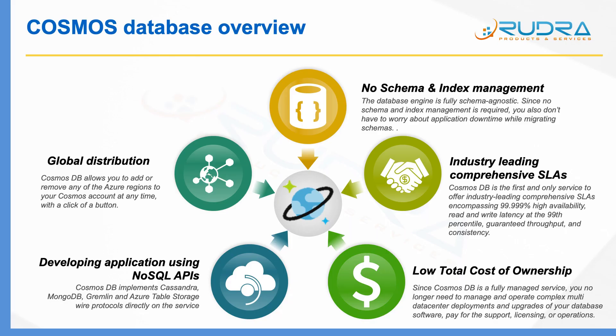Azure Cosmos database is a NoSQL data store. Unlike traditional relational databases where you have a table with a fixed number of columns and each row should adhere to the schema of the table, in a NoSQL database you don't define any schema at all for the table, and each item or row within the table can have different values or different schema itself.